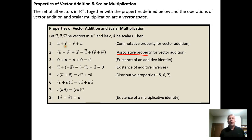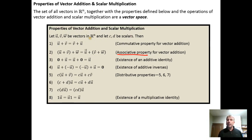We're letting U, V, and W be vectors in a vector space Rⁿ, and we're letting C and D be scalars. Then the following properties hold.